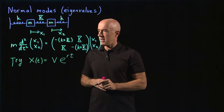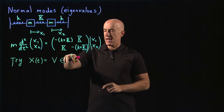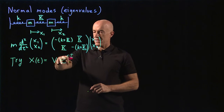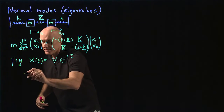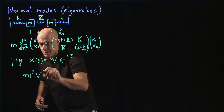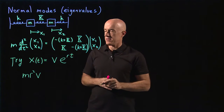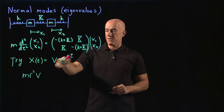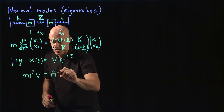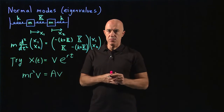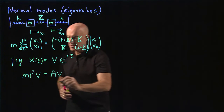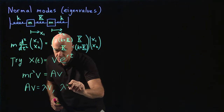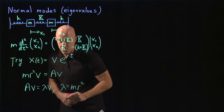What happens when we substitute in? We have the second derivative that will bring down an r squared — the first derivative brings down an r, the second an r squared. So we'll end up with m·r² times v times the exponential function, which we're going to cancel. And that's going to be equal to this matrix, which I'll call A, times v. The exponential function cancels. You should recognize this as an eigenvalue problem: Av equals lambda·v, where the eigenvalue is m·r².